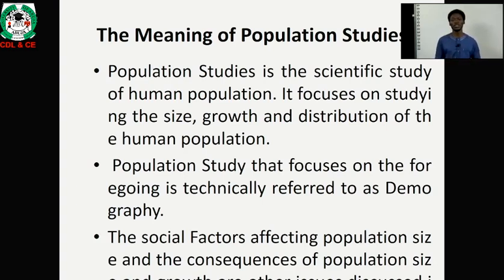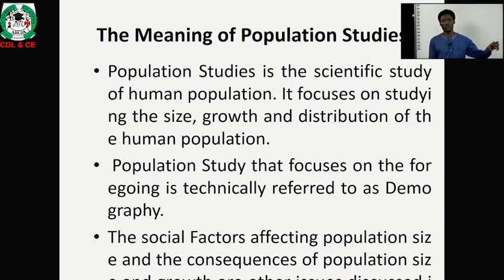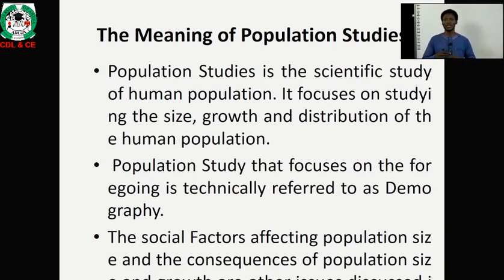Thirdly, population studies is concerned with scientifically studying the distribution of human population. When we talk about distribution, we are talking about the components of human population and the ratio each component occupies in relation to the entire population. Every population has different components, each having different numbers relative to the general population. Population studies introduces you to understanding how human population is distributed into categories and how significant each category is.